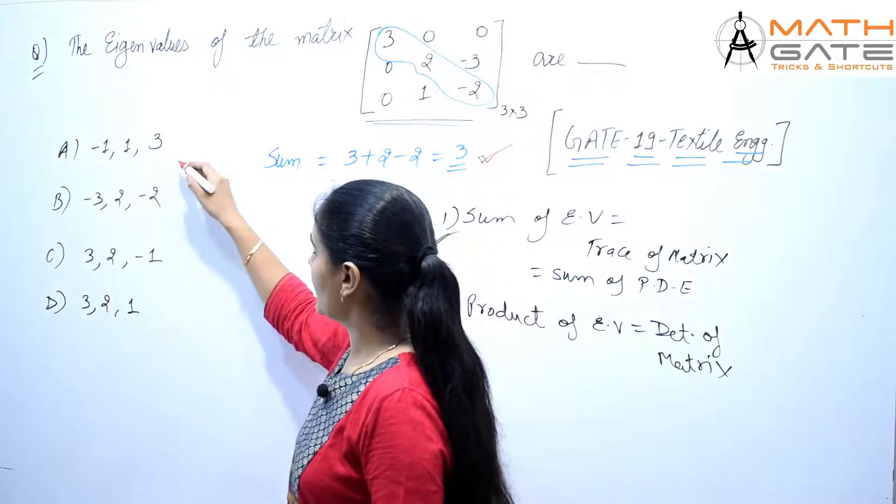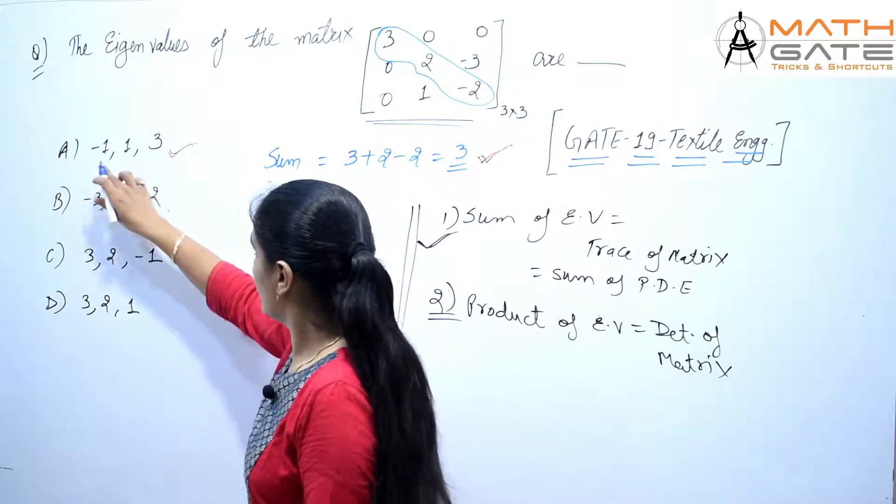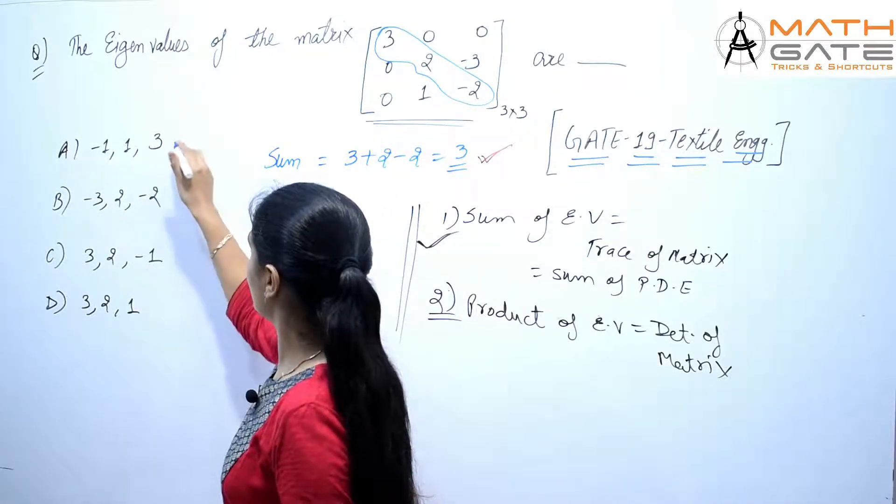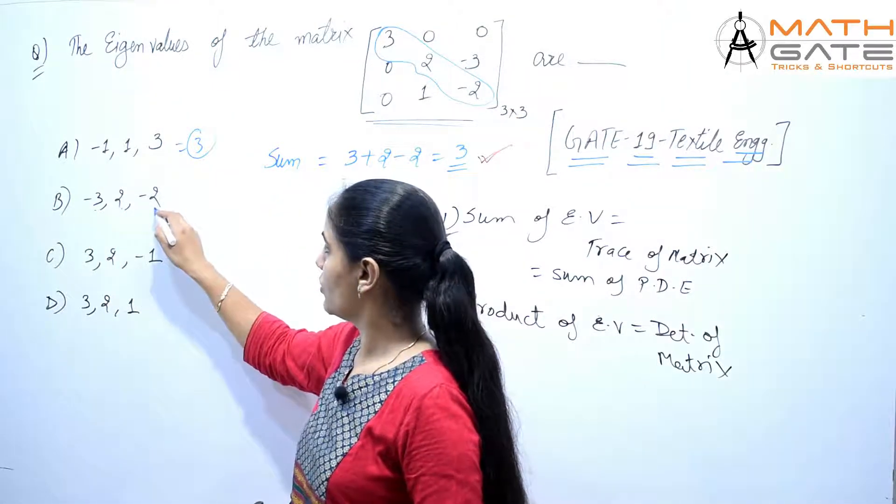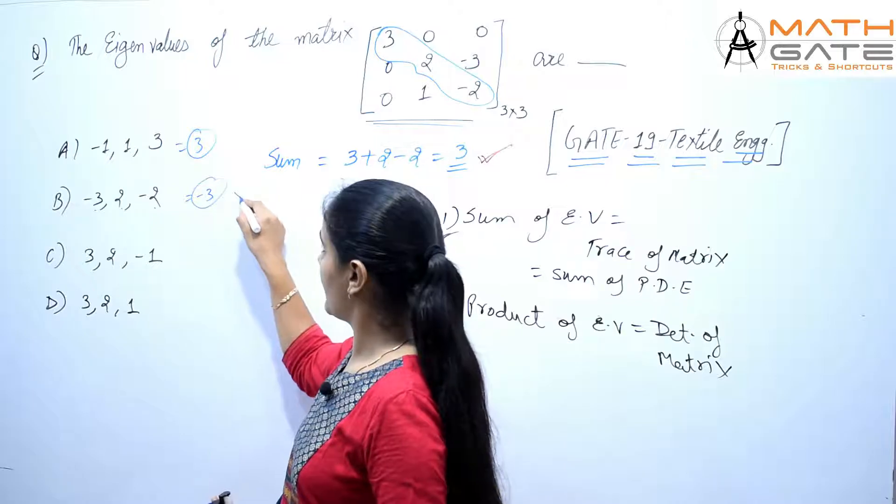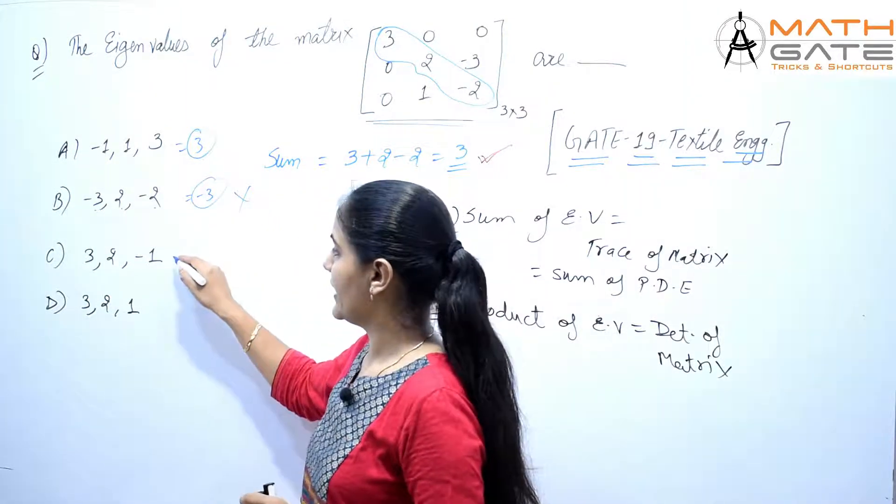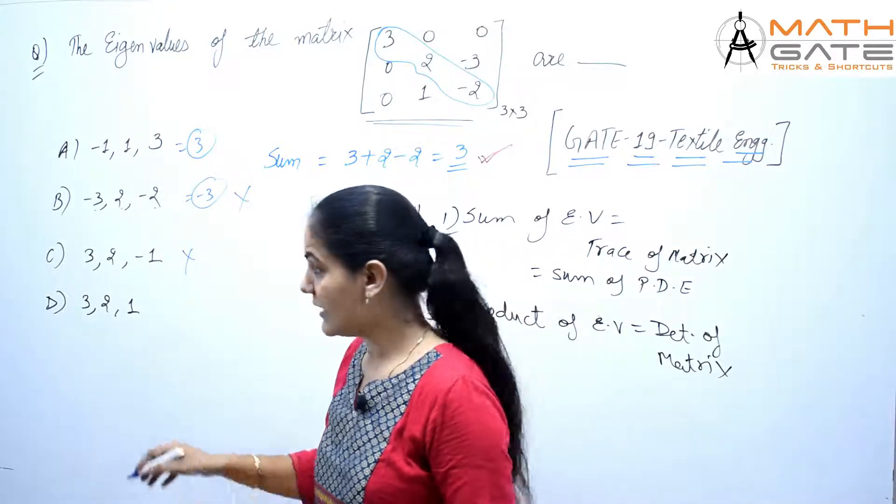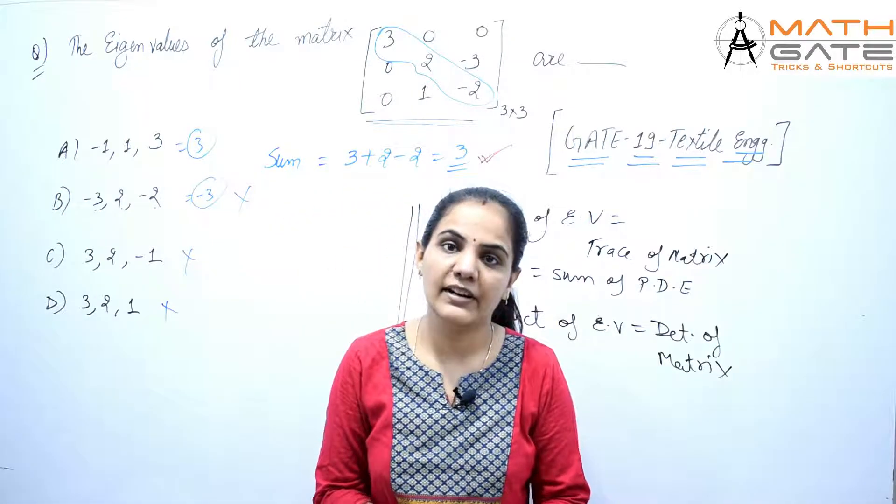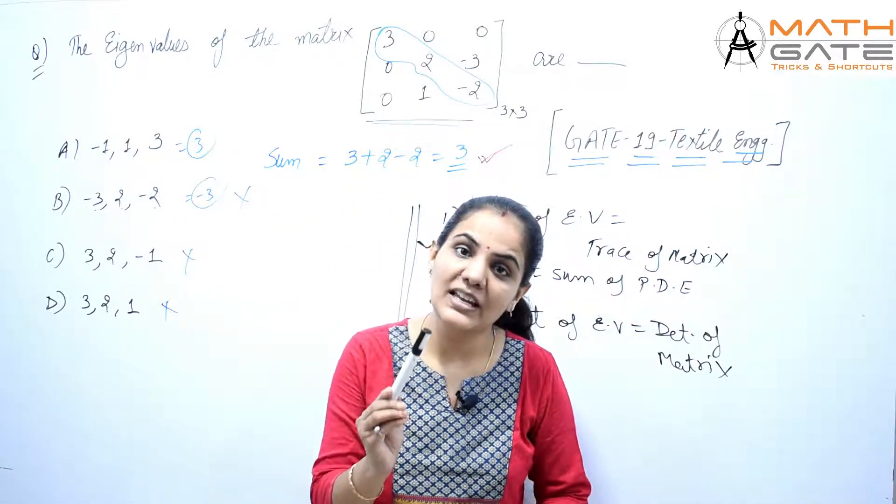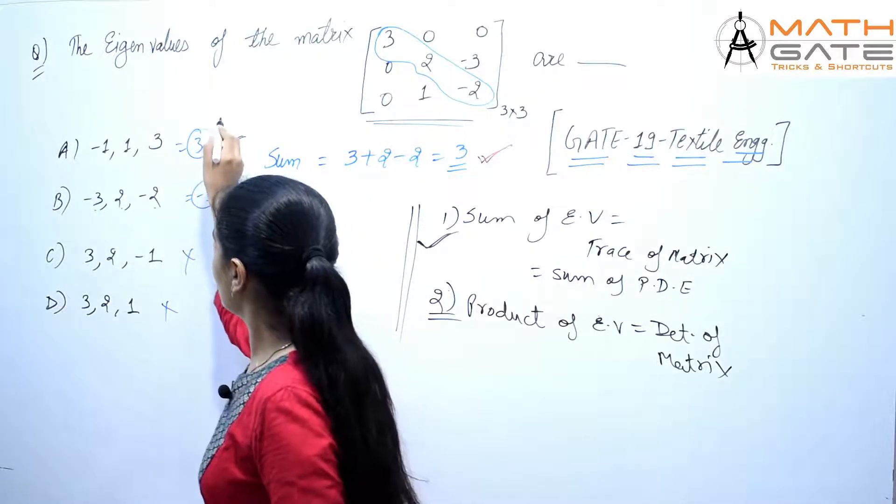First option: -1 plus 1 plus 3, yes it equals 3. Second: -3 plus 2 minus 2 equals -3, doesn't work. Next: 3 plus 2 minus 1, not equal to 3. Next: 3 plus 2 plus 1, also not equal to 3. So in this question, only option A has sum equal to 3. This is the right answer. Only option number A is the question's right answer.